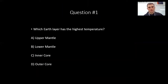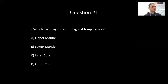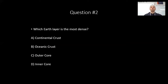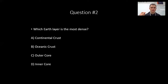Let's finish today with some questions. First practice question: Which earth layer has the highest temperature? A — upper mantle, B — lower mantle, C — inner core, or D — outer core? Think about it. Your answer is going to be the furthest one in the middle — the inner core. Next question: Which earth layer is the most dense? Same idea — density increases towards the middle, heat increases towards the middle. So it's going to be the inner core again.